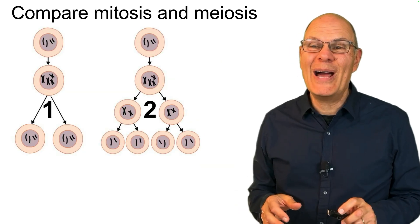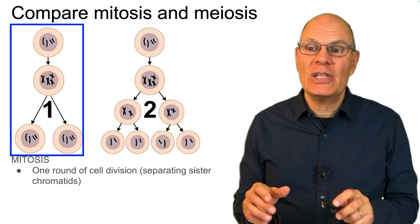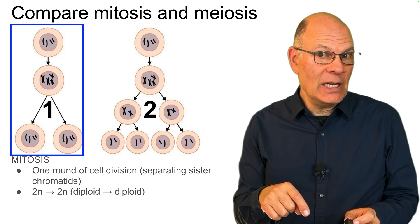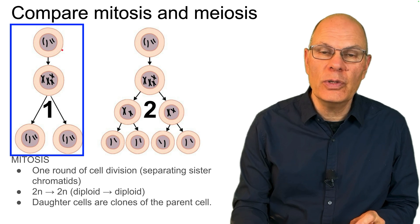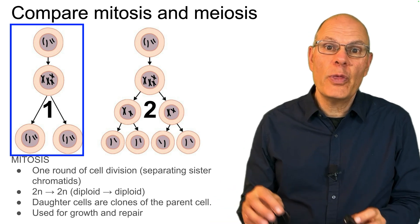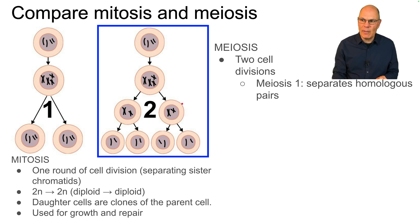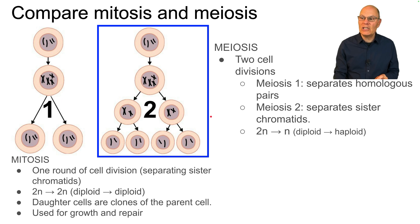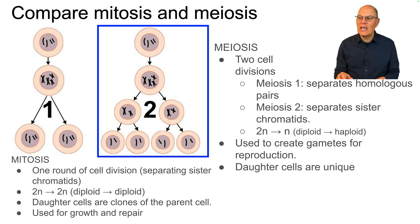Compare mitosis and meiosis. Mitosis consists of one round of cell division that separates the sister chromatids. Cells begin as diploid and end as diploid — the daughter cells are clones of the parent cell. It's used for growth and repair. Meiosis consists of two cell divisions: meiosis 1 separates homologous pairs, and meiosis 2 separates sister chromatids. We go from diploid to haploid. It's used to create gametes for reproduction and introduces variation — the daughter cells are unique.